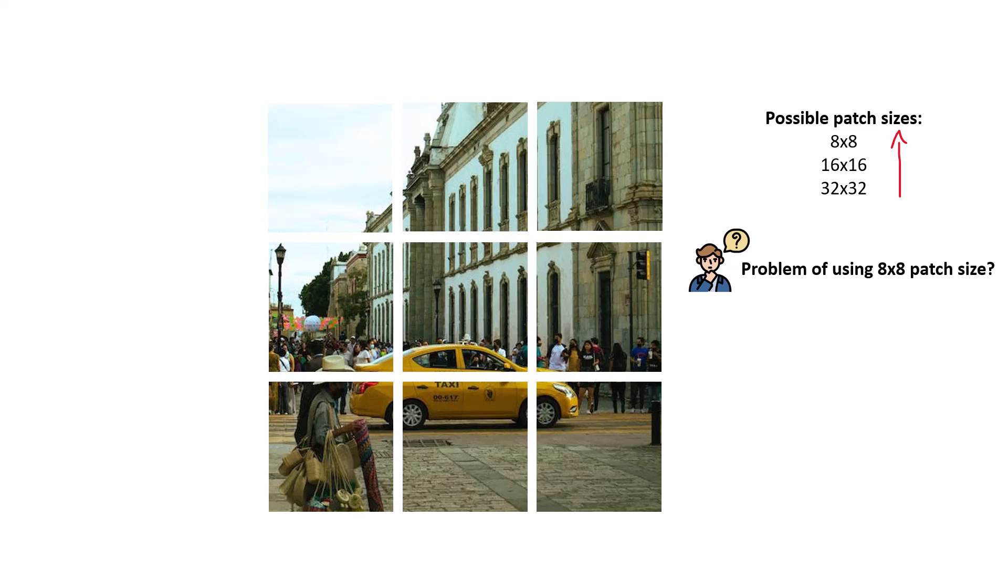The problem is that the self attentions within transformers have quadratic complexity, both in memory and computation. So for an 8 by 8 patch size, we need to have something like 36 gigabytes of GPU, which is a lot nowadays. So we have a trade-off between memory and accuracy, and for that purpose, the researchers usually use 16 by 16 patch size.